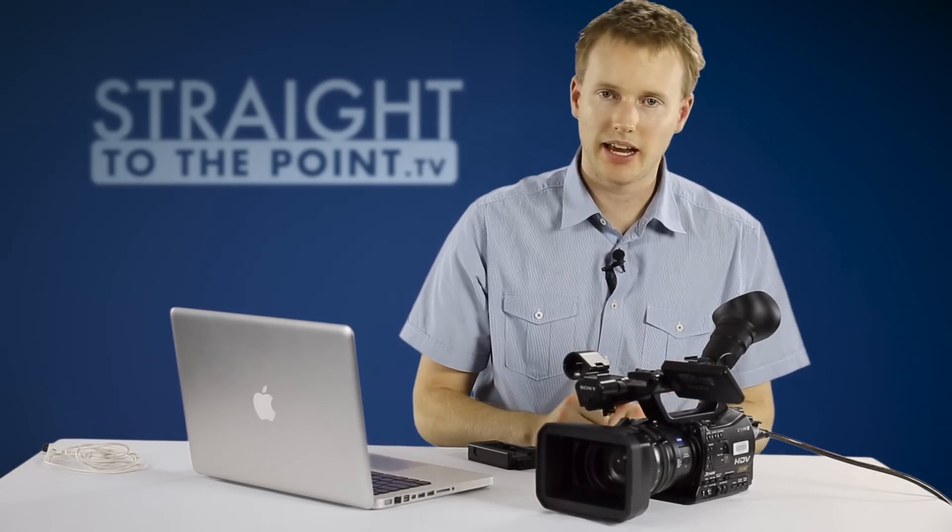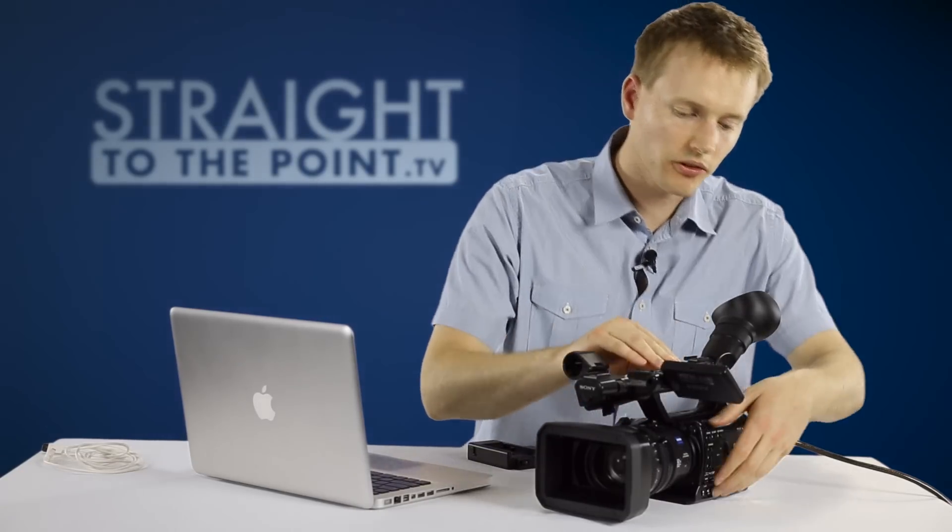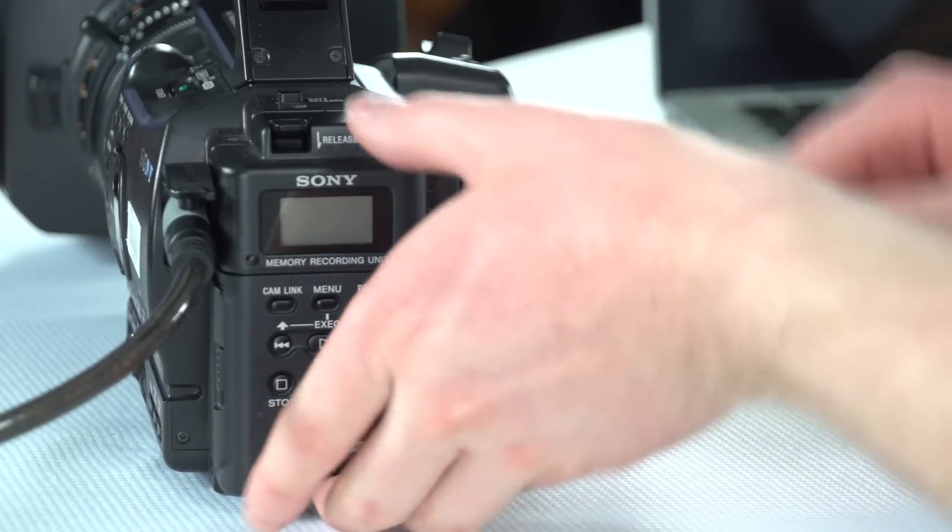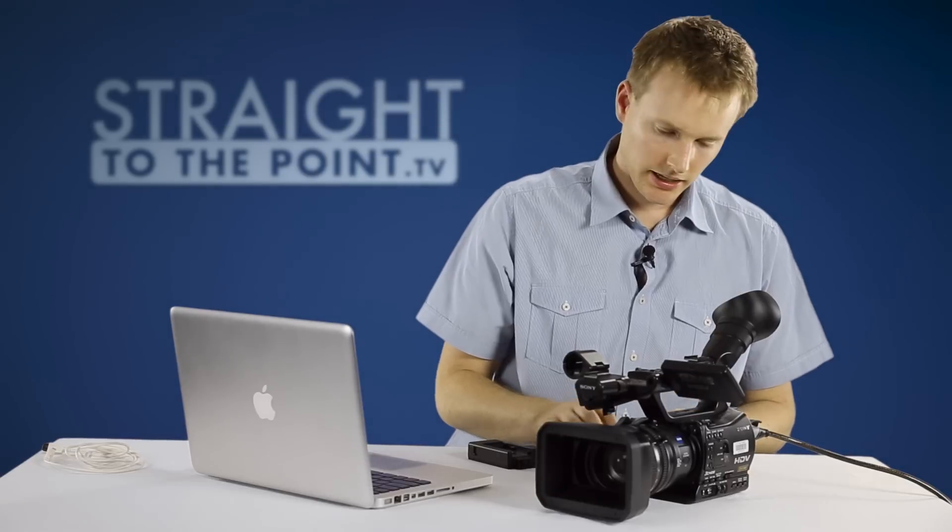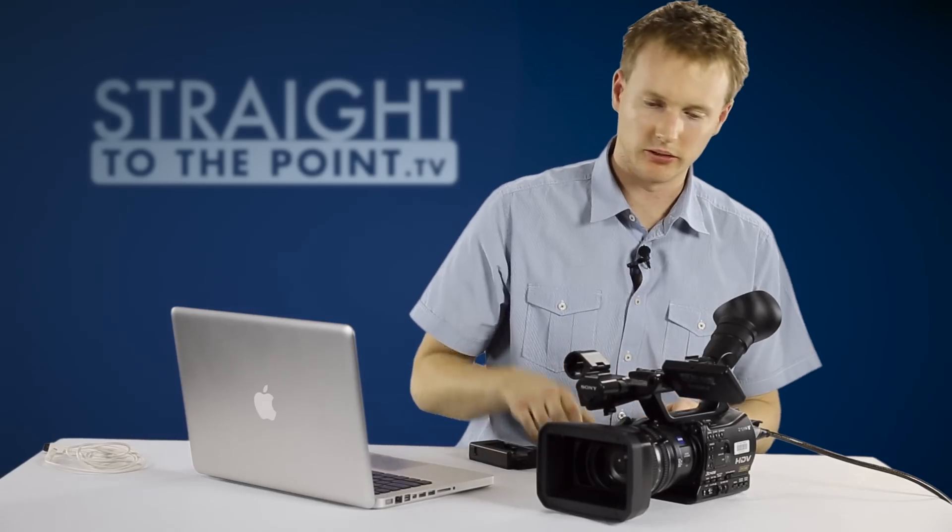So now it's actually captured some of our material. How do we get that onto the computer? Well, we'll switch off the camera and we'll switch off the memory card recorder. We'll just push down on the release to pop that off, and I'm also going to take the battery out of the camera because I want to use that in the cradle.